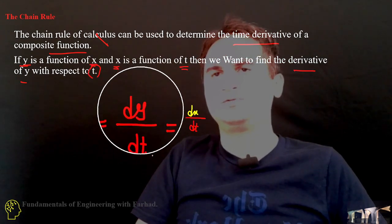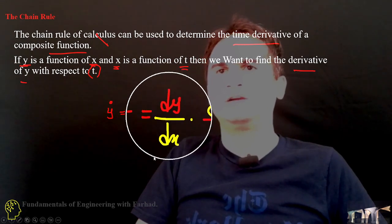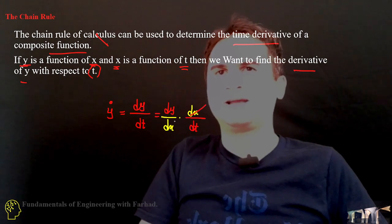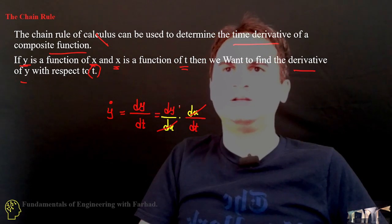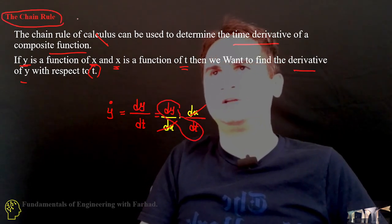y dot is equal to dy over dt. And we can write it like dy over dx times dx over dt. And we can cancel out these two dx in denominator and numerator. And it's again dy over dt. That's the Chain Rule in calculus.